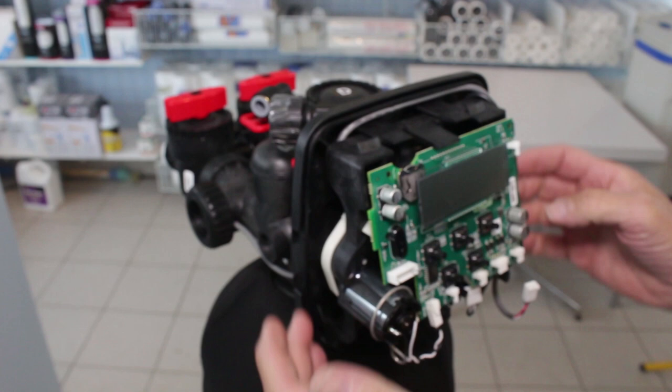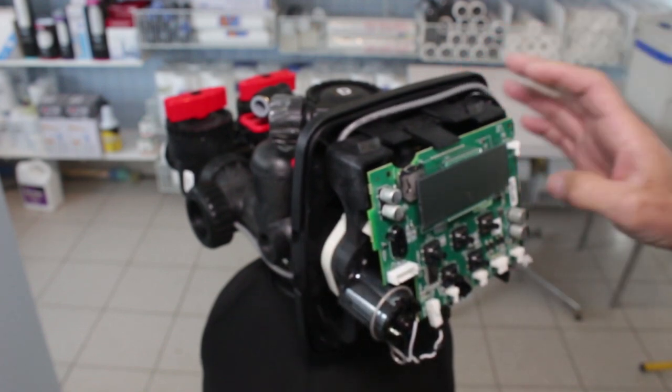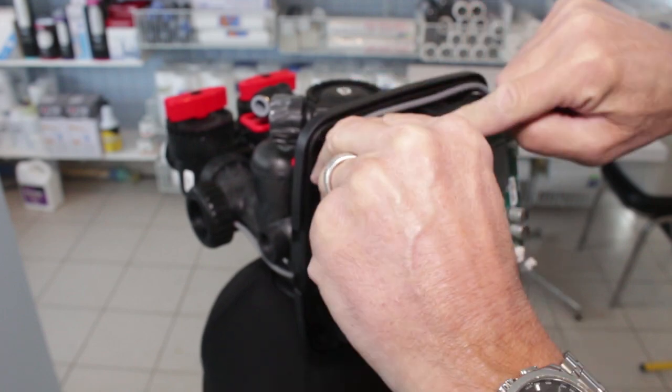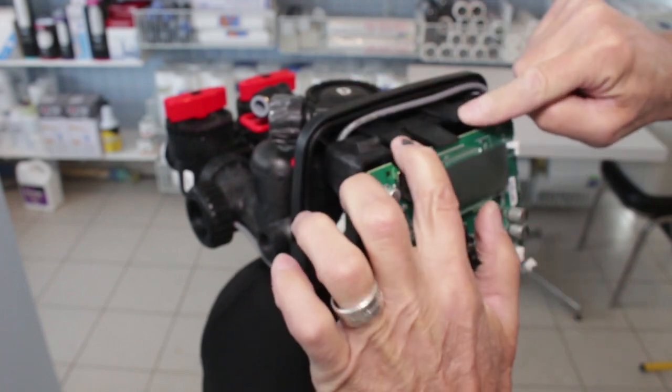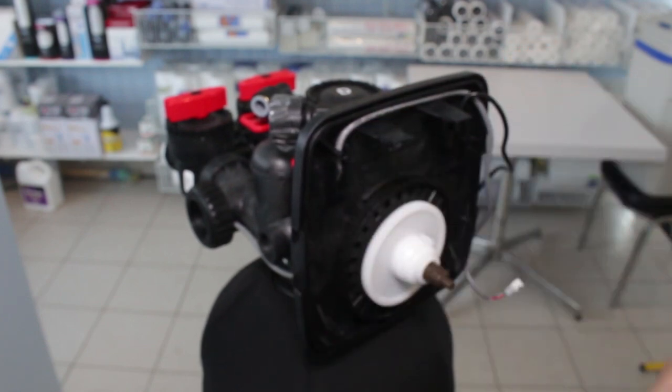Now you're going to want to remove this whole assembly here. You're just going to pull these wires aside, and there's two clips on either side. You don't need to undo this one in the center, just the two on either side. Pull those up and this comes right out.